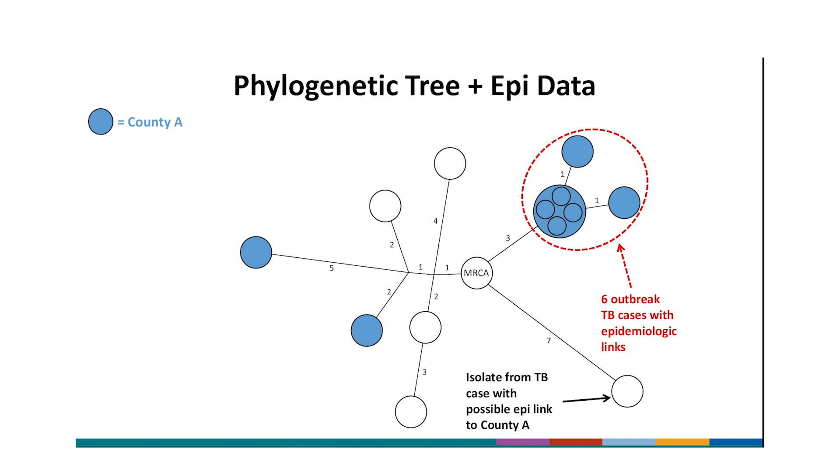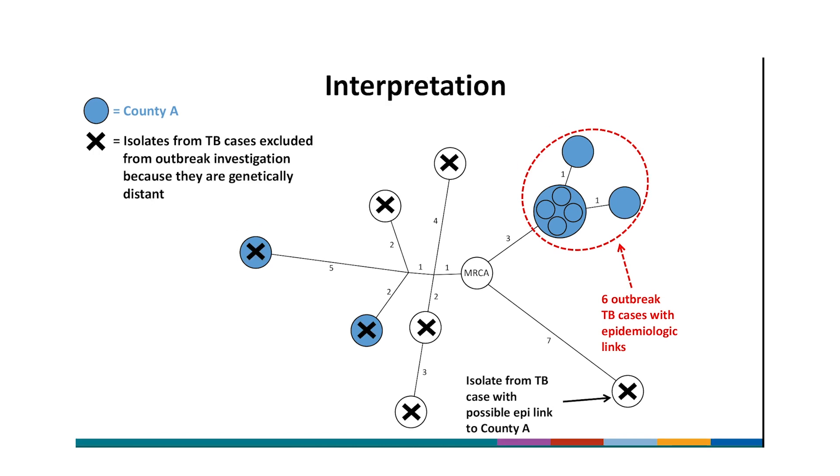Also, to the right of the MRCA is an isolate from a TB case with a possible epi link to County A. WGS shows a 10-SNP difference between this isolate and the outbreak isolates, which is a relatively large genetic distance. This suggests that this patient was not infected by any of the outbreak cases. To the left of the MRCA are six isolates, two of which are from cases reported by County A. The other four isolates are from individual cases scattered across several counties. After the clinical and epi data are added to the tree, we interpret the results.